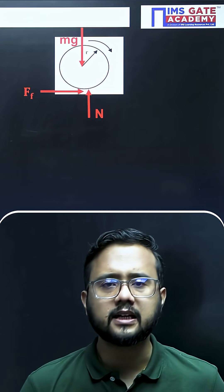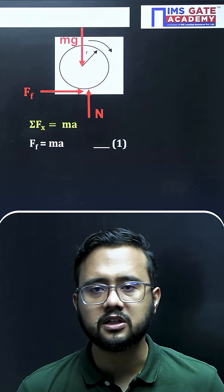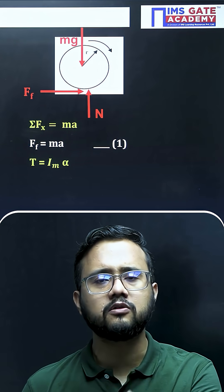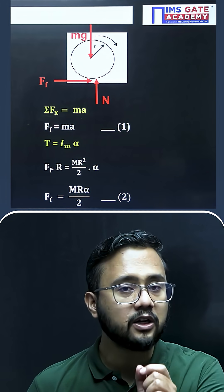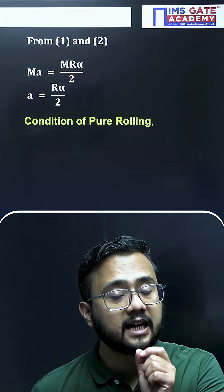We will apply first Newton's second law, that is force equals to mass into acceleration. Then we will be using torque equals to mass moment of inertia into angular acceleration. Now using both the equations we'll get the friction force. If I use equation one and two, I will be getting the answer of acceleration.